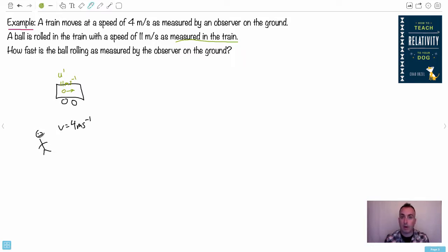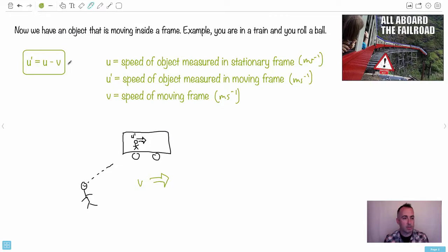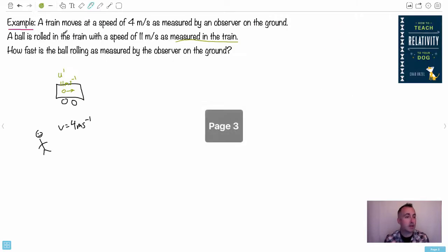Then relativity becomes a lot easier. So this is U prime, we've got V, and the question is, how fast is it rolling as measured by the observer on the ground? In other words, me sitting there watching this thing go by, how fast will that ball seem to be moving? Most people are pretty good at this, they can see it right away. But sometimes the examples aren't so simple. So we'll use that equation.